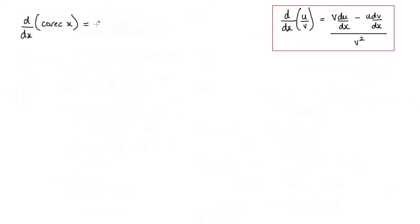Now cosec x, we can actually rewrite that as a quotient, which would be 1 over sin x. So let u equal 1, and we'll let v equal sin x.